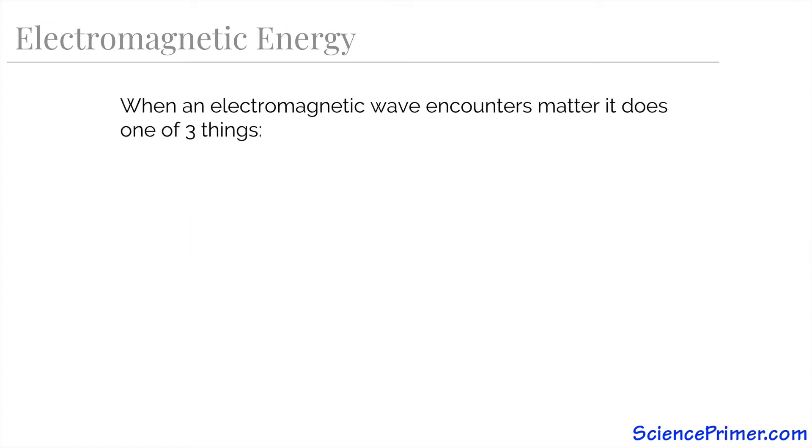Once this wave is created, it moves through space until it encounters matter. When it encounters matter, one of three things can occur. It can reflect off of the matter and continue to move through space in a different direction, or it can pass through the matter, also continuing on into space.